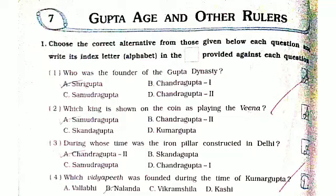Hello friends, welcome back. Today we are doing Class 6 HS workbook, Chapter No. 7: Gupta Age and Other Rulers. Question No. 1: Choose the correct alternative from those given below each question and write its index letter alphabet in the box provided against each question.